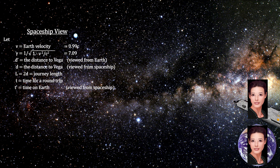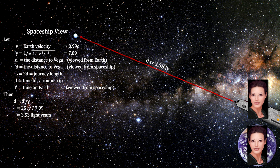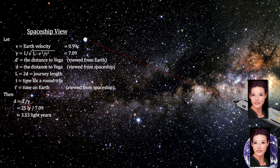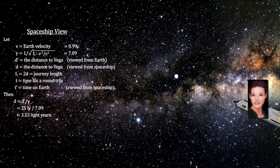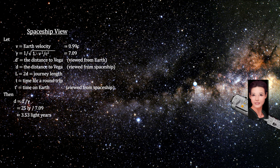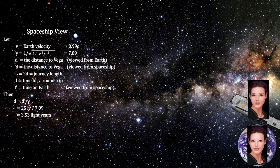But from the point of view of the twin on the spaceship, she is motionless in her own reference frame, and the twin on the Earth is moving away and back. In addition, she sees the distance to Vega at only 3.5 light years due to space contraction. She also sees the twin on the ground aging slower than her over the seven-year journey.